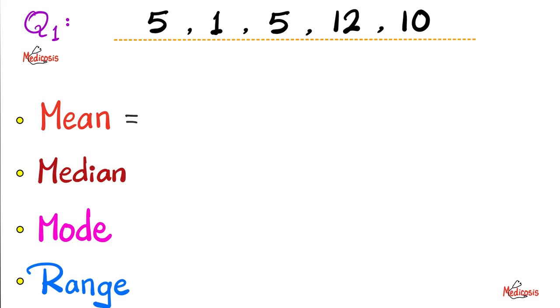Let's start with the mean, the arithmetic mean. How do you do this? Basically, it's the sum of all of the values divided by their number. And what's the sum of all the values? You simply add them up together. 5 plus 1 plus 5 plus 12 plus 10.